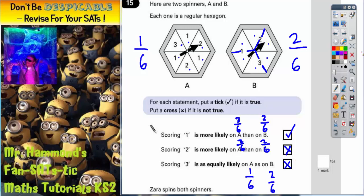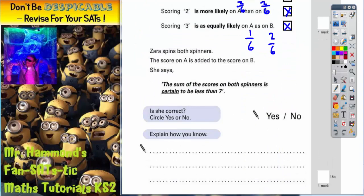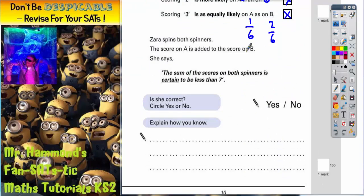Now let's get a different colour and scroll down and look at the second question. The second part of the question says this. Zara spins both spinners. The score on A is added to the score on B.